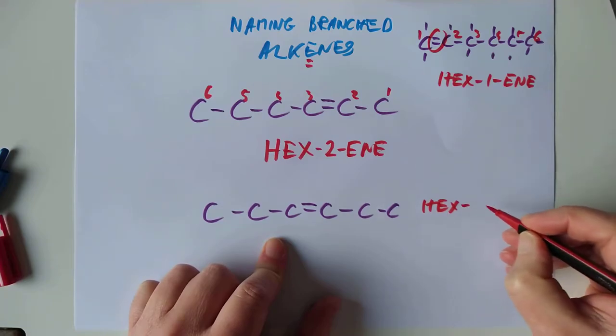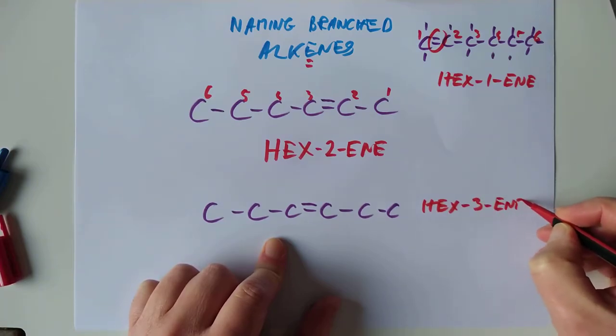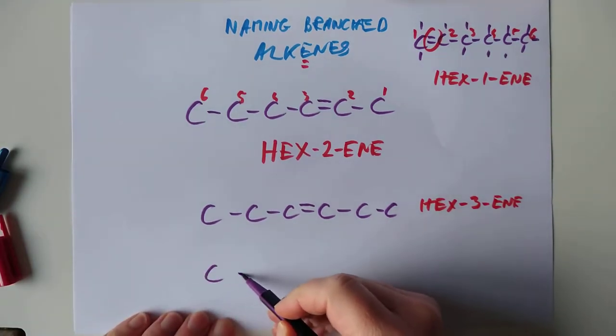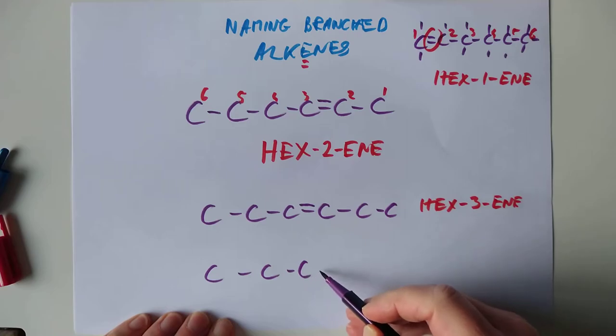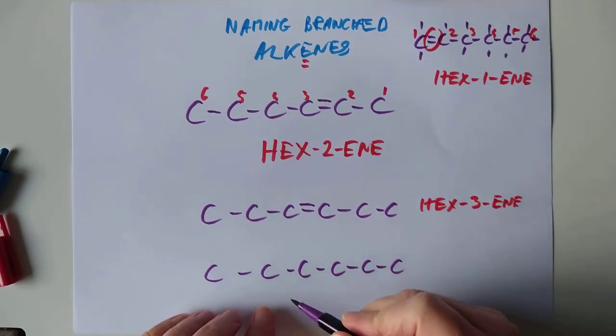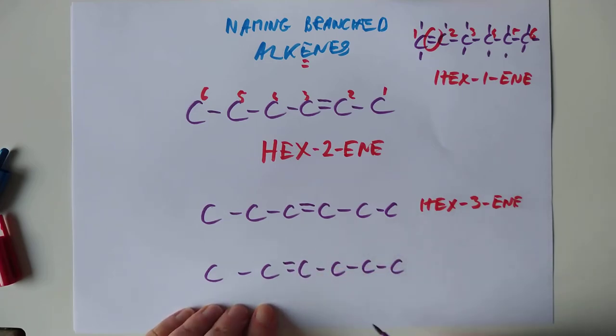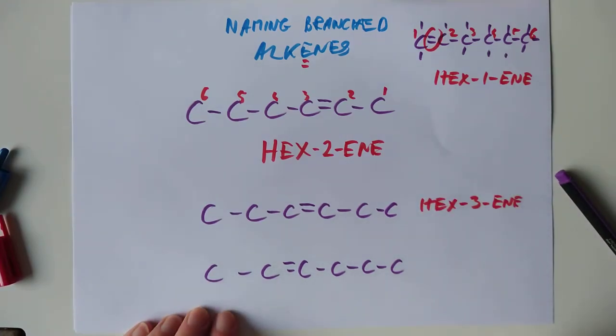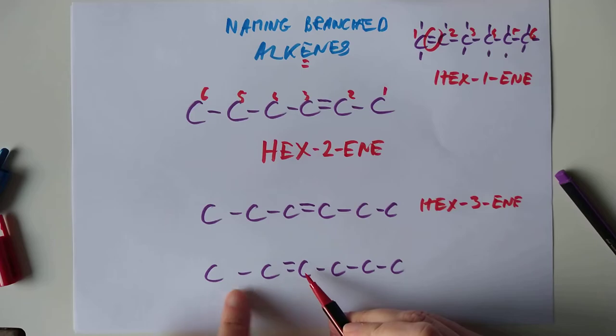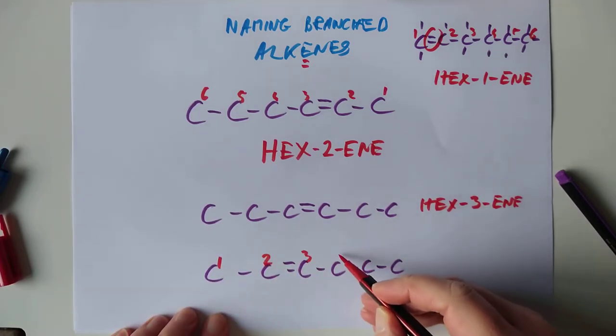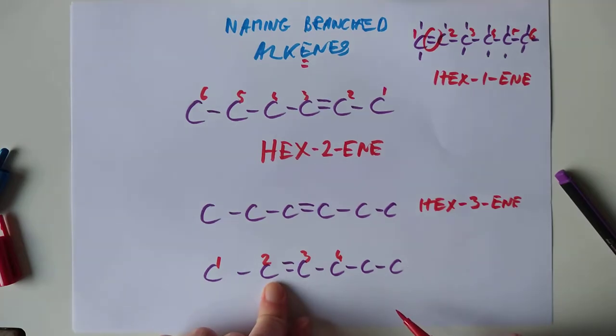Trick question. Can you get hex-4-ene? Let's see if you can. Doesn't sound too difficult, surely, does it? 1, 2, 3, 4, 5, 6. And 1, 2, 3. Shouldn't that just be hex-4-ene? No. Because if you remember correctly, I said you're supposed to number from whichever end of the chain starts nearest the double bond. So this end is now nearer than this end. So 1, 2, 3, 4. Oh, look. That's actually hex-2-ene.